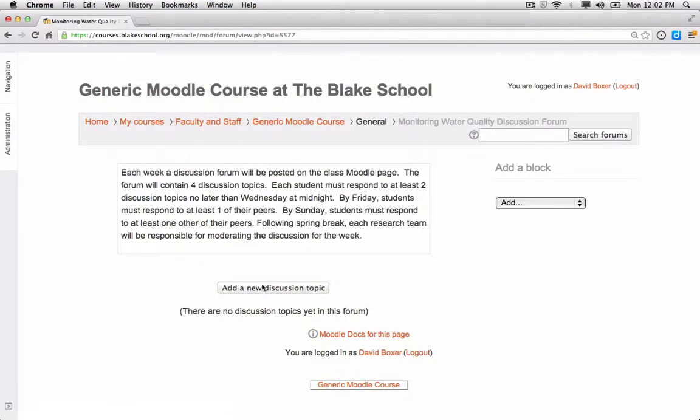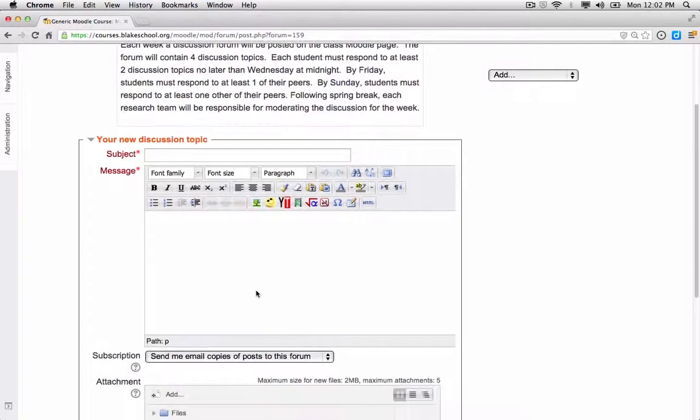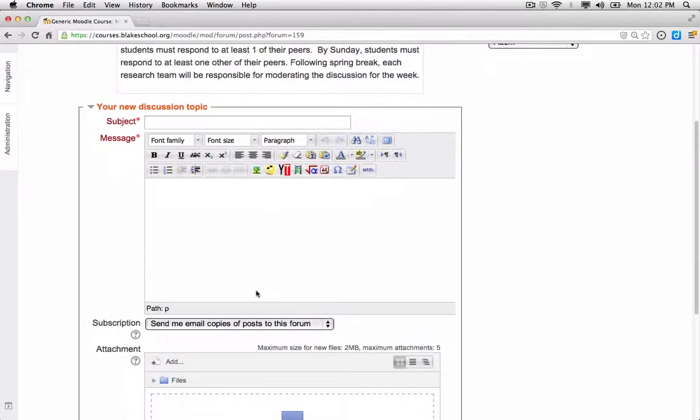And it couldn't be any easier, we're just going to click the add a new discussion topic. I've created four questions that we're going to use, and because I want the fourth question to appear at the bottom of the discussion forum, I'm going to add that first.